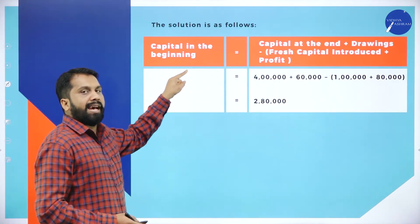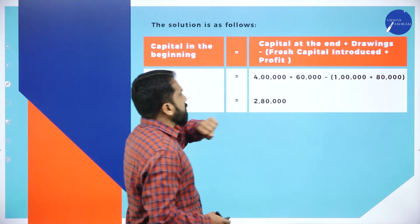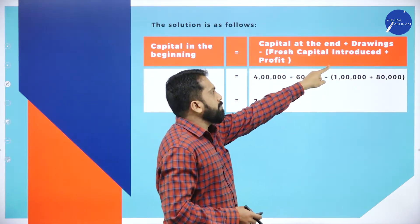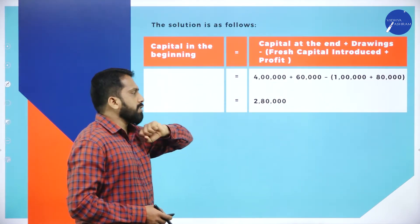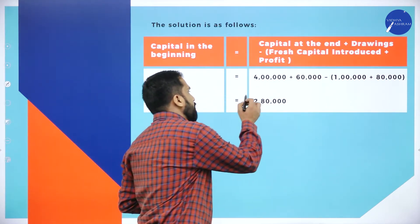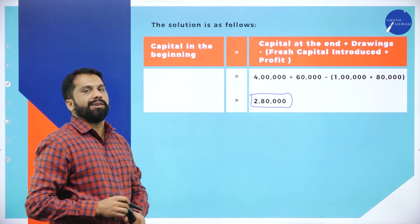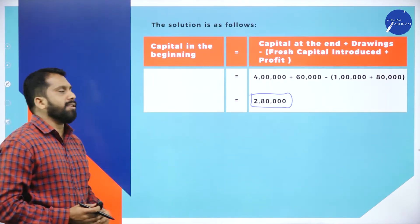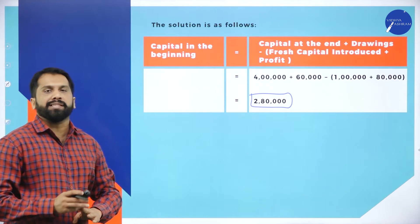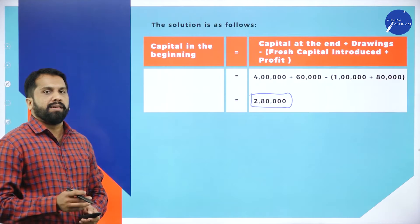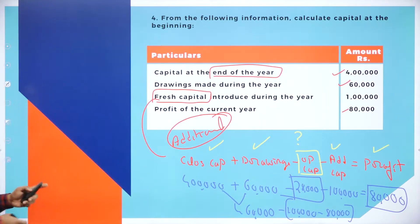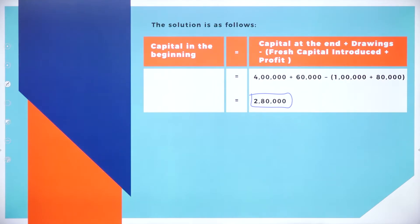For the solution — capital in the beginning, i.e. opening capital — the format is: capital at the end (closing capital) plus drawings, minus opening capital, minus profit. Doing all the calculations, you get the answer of 2,80,000. So if closing capital is given and you want to find opening capital, this is the way to do it. Take a screenshot of the question and the working note — this is the actual answer. Now we go to the last question for the session.